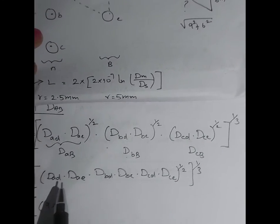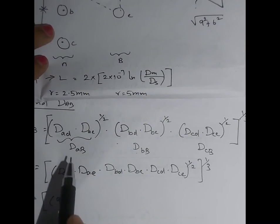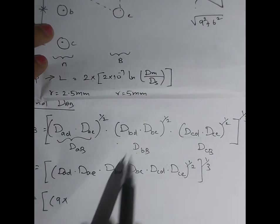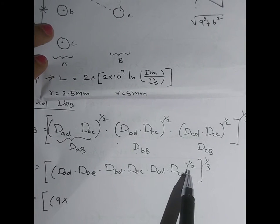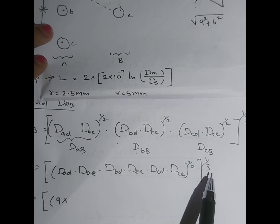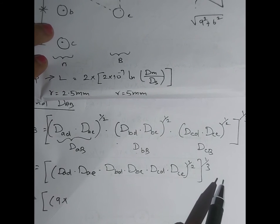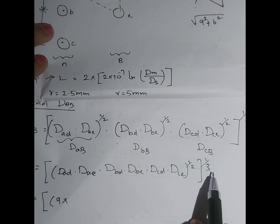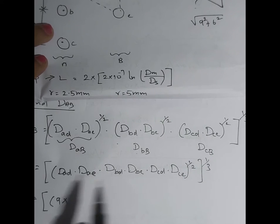Combining everything as multiplication: Dad × Dae × Dbd × Dbe × Dcd × Dce, whole power 1/2, then whole power 1/3. The powers can be multiplied: 1/2 × 1/3 = 1/6. So the entire expression is raised to the power 1/6.